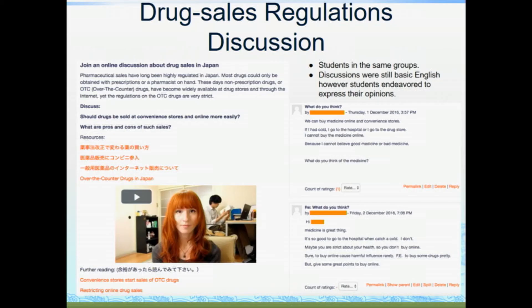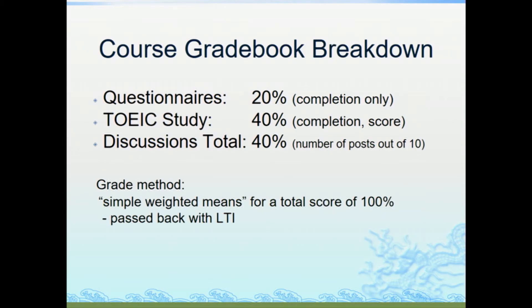The second shared discussion was on drug sales regulations. Why drug sales? Because one school majored in pharmacy and the other in economics, so we found common ground and had a very lively discussion. The course grade breakdown is: questionnaire 20%, TOEIC study 40%, and discussions total 40% — altogether 100%, by simple weighted means.